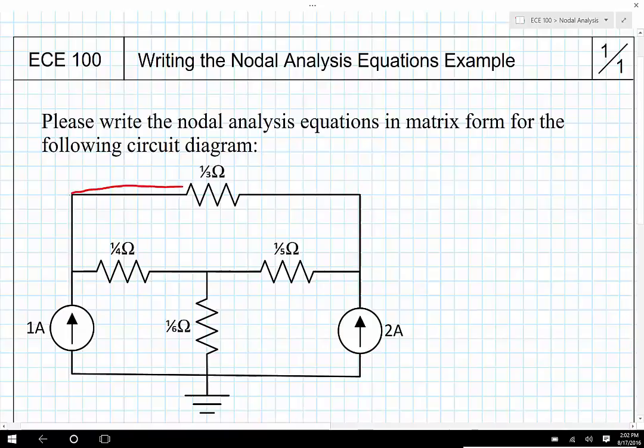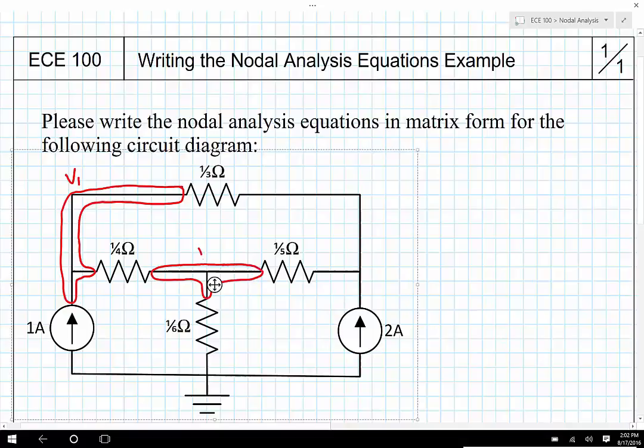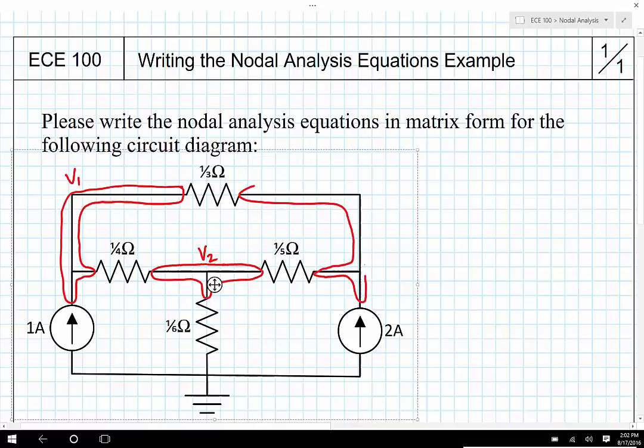So the first thing I'm going to do is I'm going to identify the extent of each node. So you probably won't do this after you've been doing it for a while, but for right now I'm going to go ahead and do this. So this will be V1, and then over here I'm going to take the middle term here, I'm going to take this to be V2, and then over here this will be V3 like this. And then of course down here in the bottom, this is going to be V0, and you can see the ground symbol there.